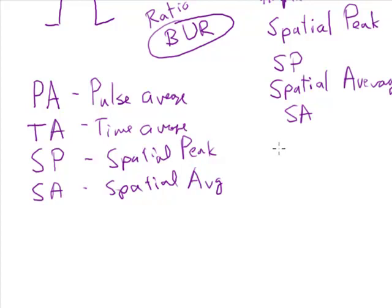And so you'd have them written down in different ways such as SPPA or SATA, depending on what type of intensity you were looking at.